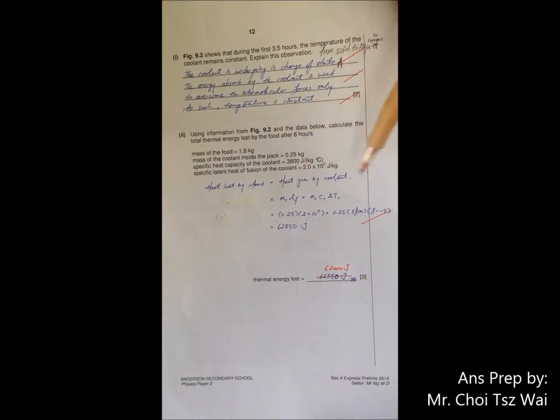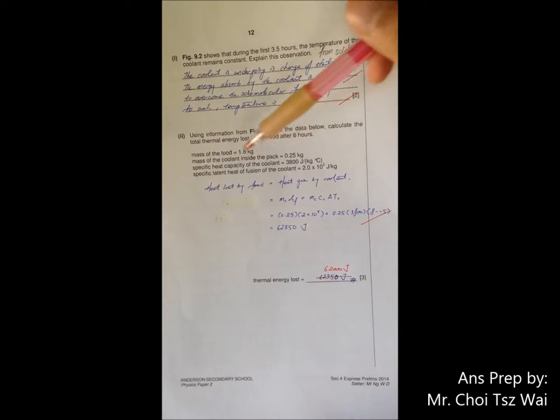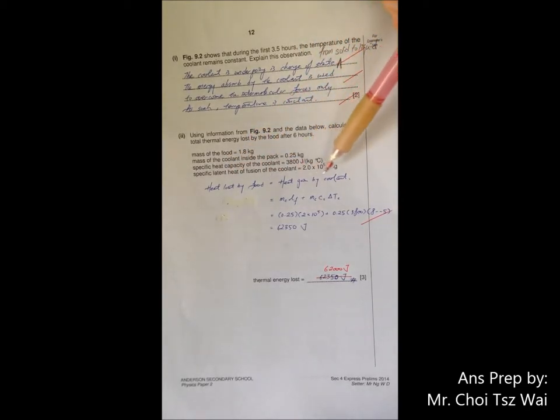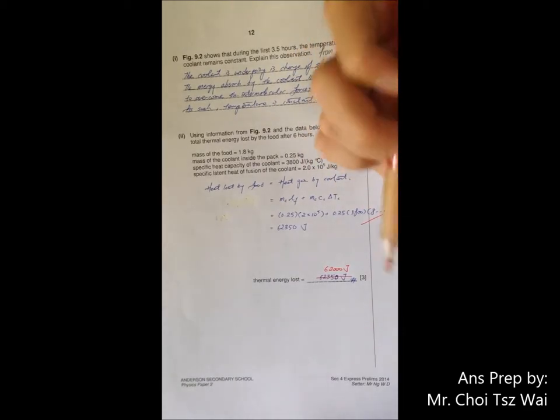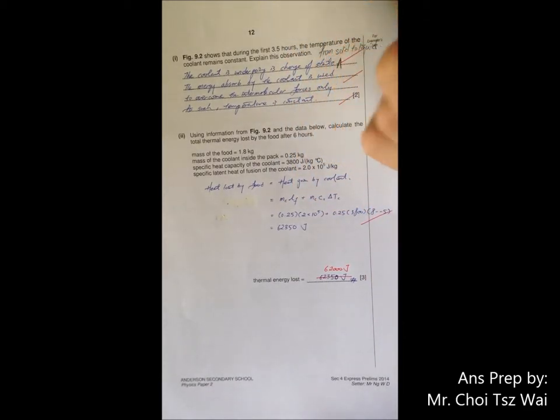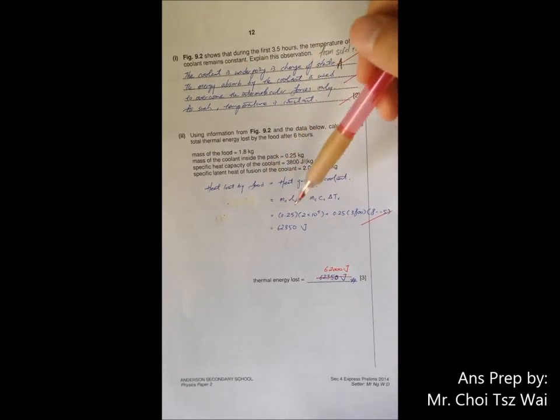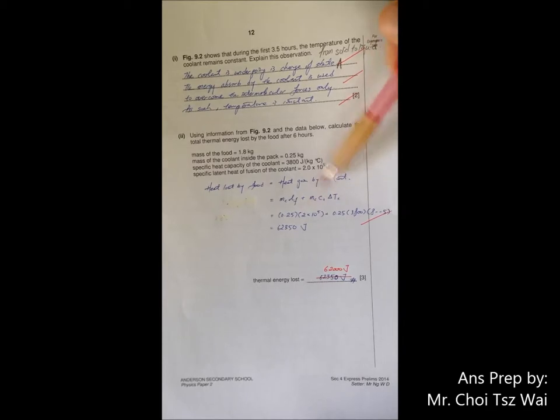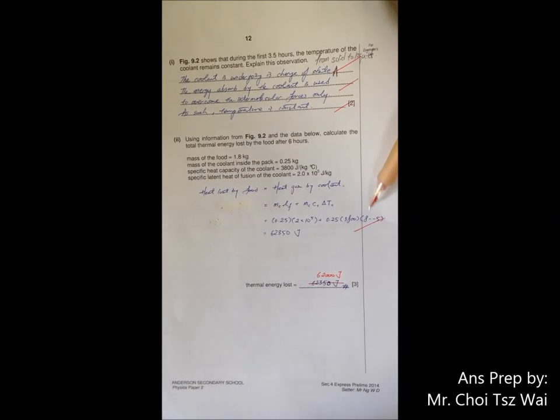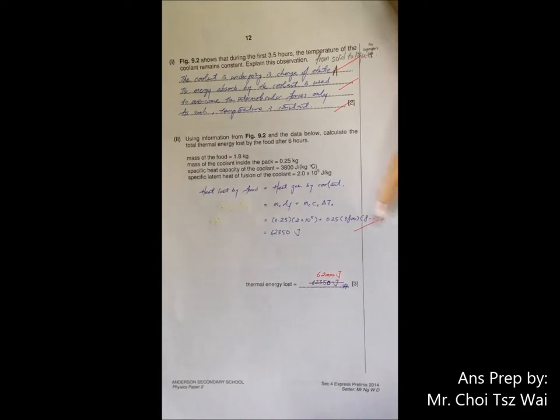Part 2, calculation is quite simple. You need to have the understanding that the heat loss by the food must be equal to the heat gained by the coolant. And the heat gained by the coolant actually comes in twofold. Number 1 is that the energy is used to overcome the intermolecular force because it's melting. And number 2, after the coolant melts, it actually increases its own temperature to room temperature. So you have two parts. Mass times latent heat of fusion and mass times the specific heat capacity and the change in temperature. This change in temperature, please be careful. The change is from minus 5 to 8 degree. So effectively the change is 13 degrees C.